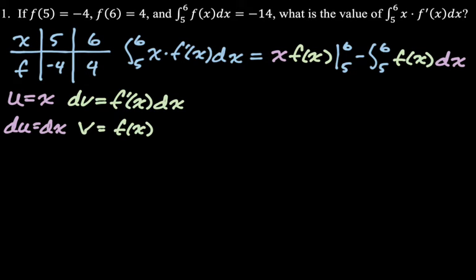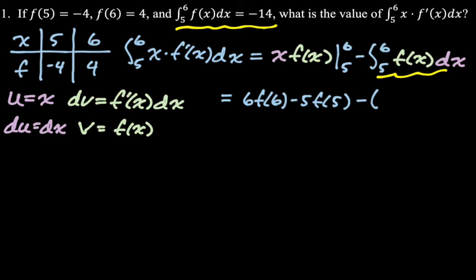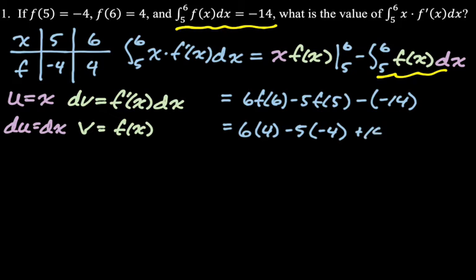That's just a fundamental theorem evaluation. We plug in 6 and then 5, so we get 6 f of 6 minus 5 f of 5, and then minus the integral from 5 to 6 of f of x dx. That integral is given — it's just negative 14. So we plug that in. Then using the table: f of 6 is 4 and f of 5 is negative 4. So we get 6 times 4, minus 5 times negative 4, plus 14. That gives us 24 plus 20 plus 14, which is 58.